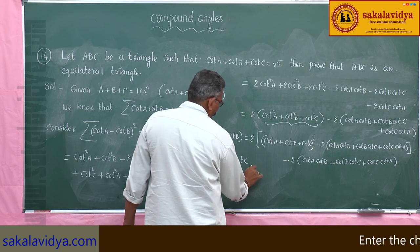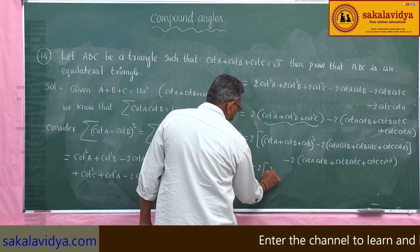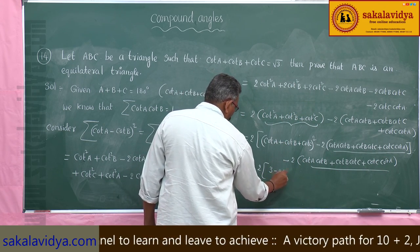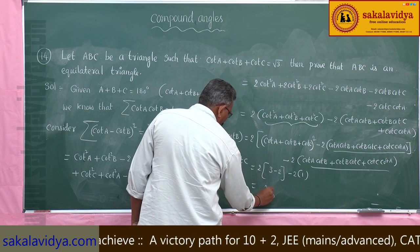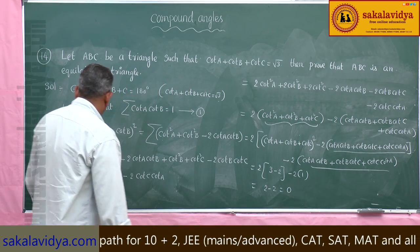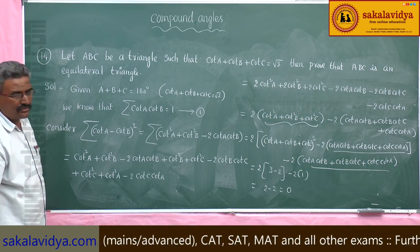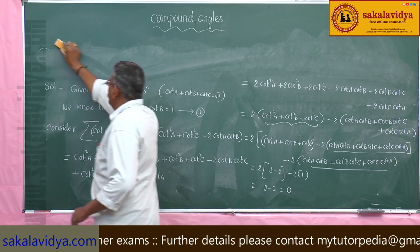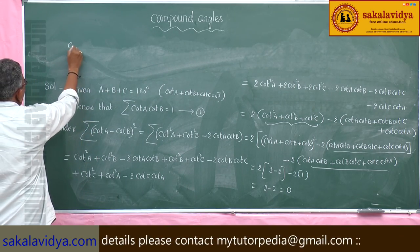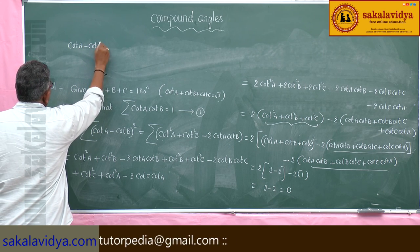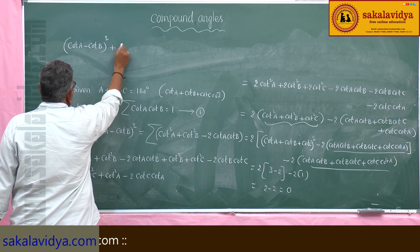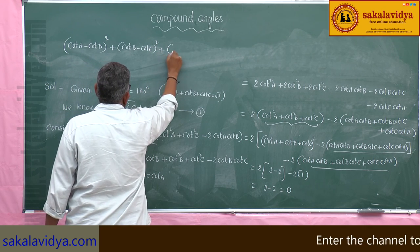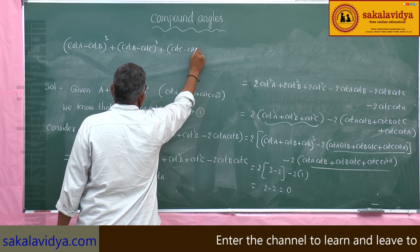Substituting, this value becomes 2 times (root 3) squared minus 2 times 1 minus 2 times 1, which equals 6 minus 2 minus 2 equals 0. Since sigma (cot A minus cot B) squared is equal to 0, we get (cot A minus cot B) squared plus (cot B minus cot C) squared plus (cot C minus cot A) squared is equal to 0.